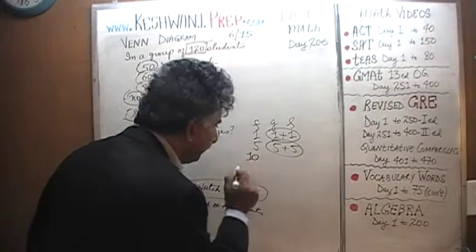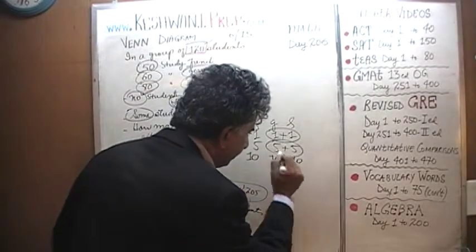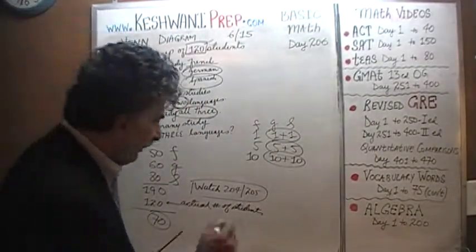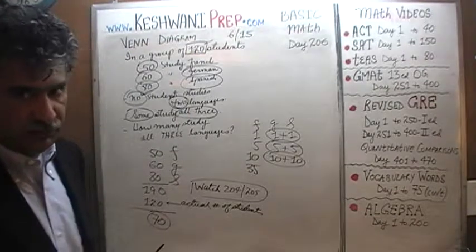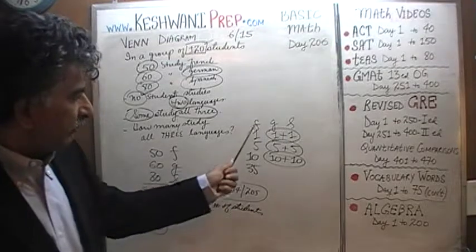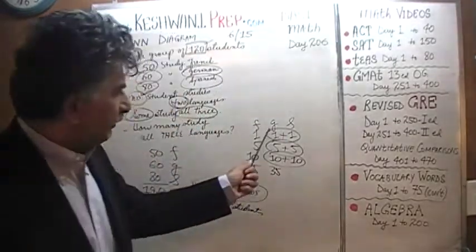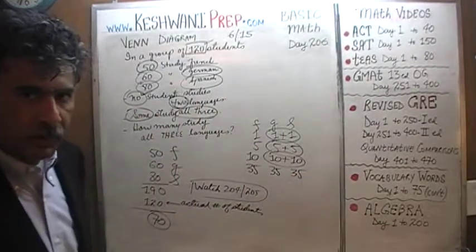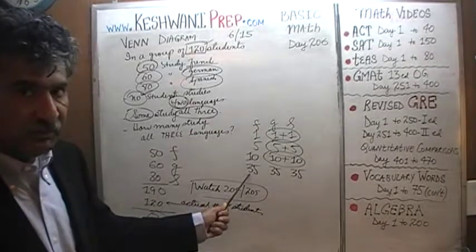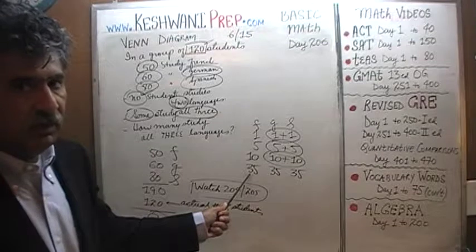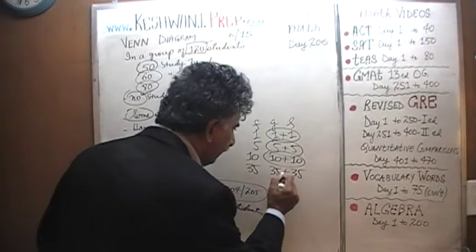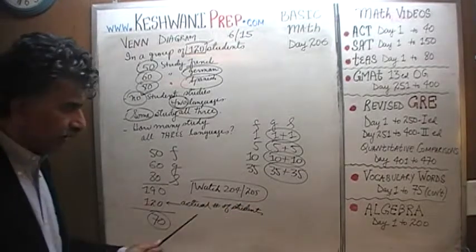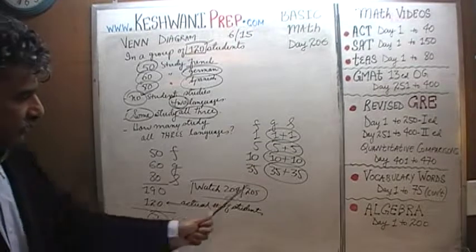If we had ten people taking all three languages, they would be counted as 30 people, giving a discrepancy of 20. If we had 35 people taking all three languages, those 35 would be counted first as people taking French, again as people taking German, and a third time as people taking Spanish. Having counted 35 people three times — triple counting — we find a discrepancy of 70, a surplus of 70 too many.